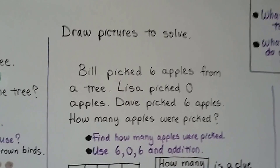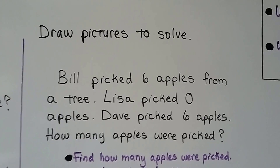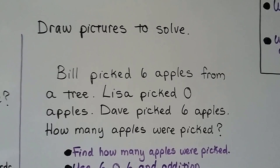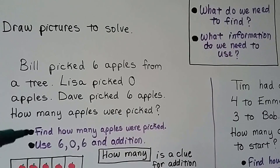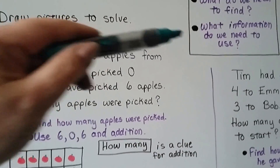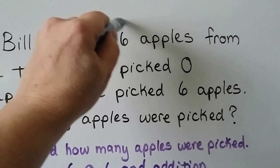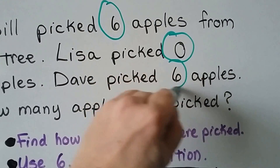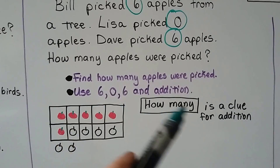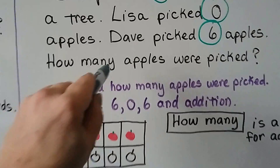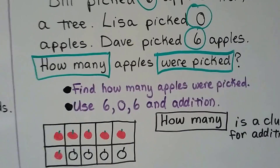We can draw pictures to solve. Bill picked six apples from a tree. Lisa picked zero apples. Dave picked six apples. How many apples were picked? What do we need to find? We need to find how many apples were picked. What information do we need to use? We need to use the six, the zero, and the six — those are the important numbers. How many is a clue for addition; it's asking how many were picked, so we need to add the numbers.